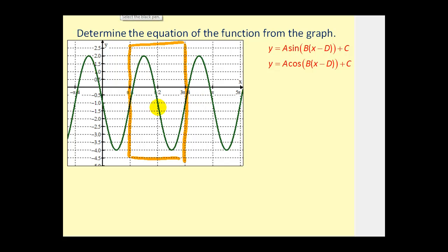Next, we'll draw a line through the center. It looks like it's going to be at negative one. When we draw the center line through y equals negative one, we know that our vertical shift c will be negative one. The amplitude from negative one to positive two is three units, so a is equal to three. The phase shift is right pi over four units, so d is equal to pi over four.